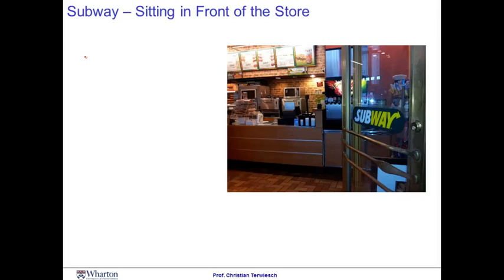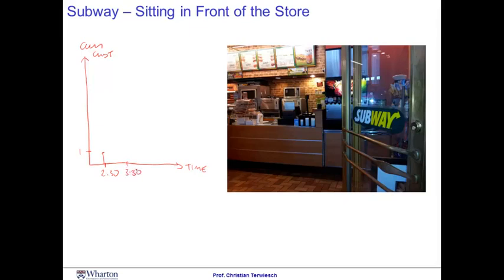Instead, I will give you an assignment: keep track of what times the various customers arrive. Then try to draw the following graph. On the x-axis, you're going to plot the time. On the vertical dimension, you're going to draw the cumulative number of customers that have arrived. For example, if the first customer arrived after 2 minutes and 30 seconds, you draw the first point there. If the next customer came in a minute later at 3 minutes 30, you plot another data point. Step by step, you draw the times at which customers arrive and the cumulative number who have arrived. This creates what we call the cumulative inflow of customers to the restaurant.